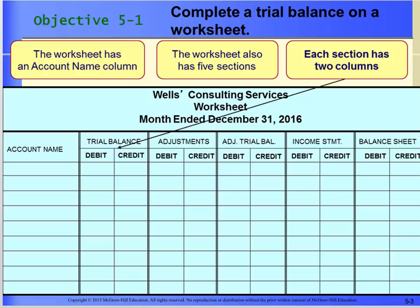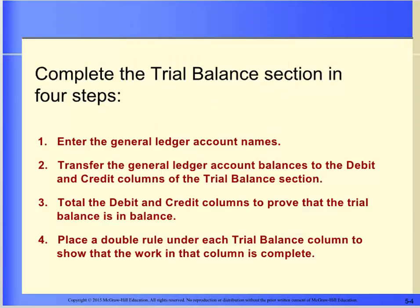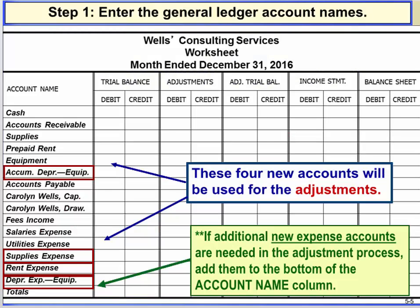What is a worksheet? It is a tool that accountants use at the end of an accounting period. The worksheet has three parts to the heading, just like a financial statement. The heading answers who, what, and when. The first column of a worksheet is the account name column.